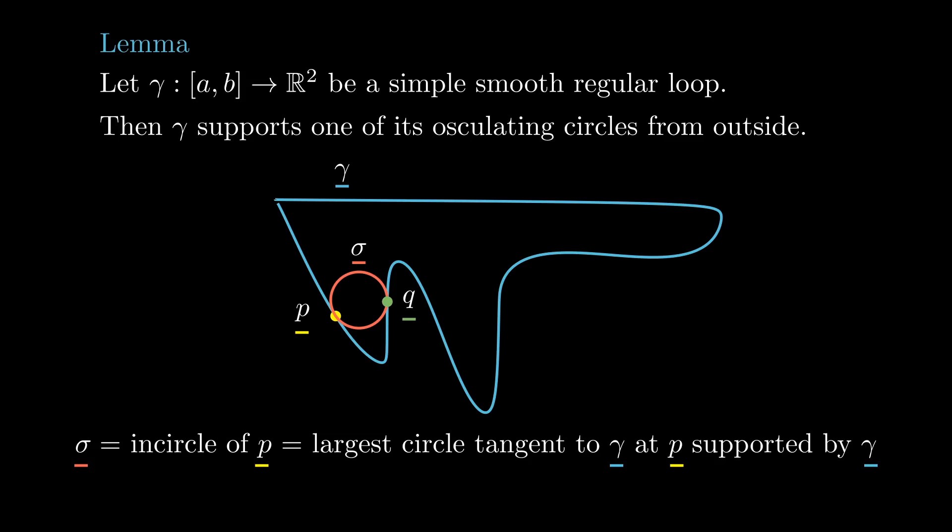That implies, due to the second derivative test, that there is a neighborhood of p in gamma that doesn't intersect sigma p at a point other than p.